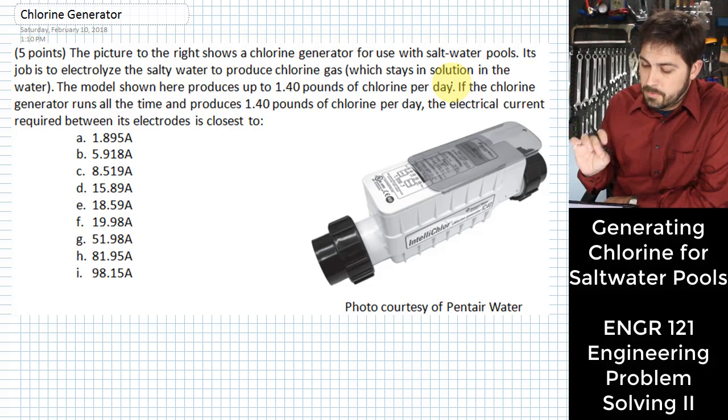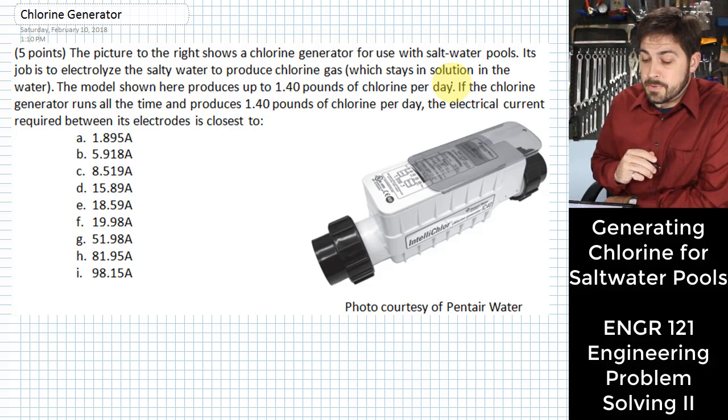The model shown here produces 1.4 pounds of chlorine per day. If the chlorine generator runs all the time and produces 1.4 pounds of chlorine per day, the electrical current required between the electrodes is closest to, and we have to pick one of these choices.